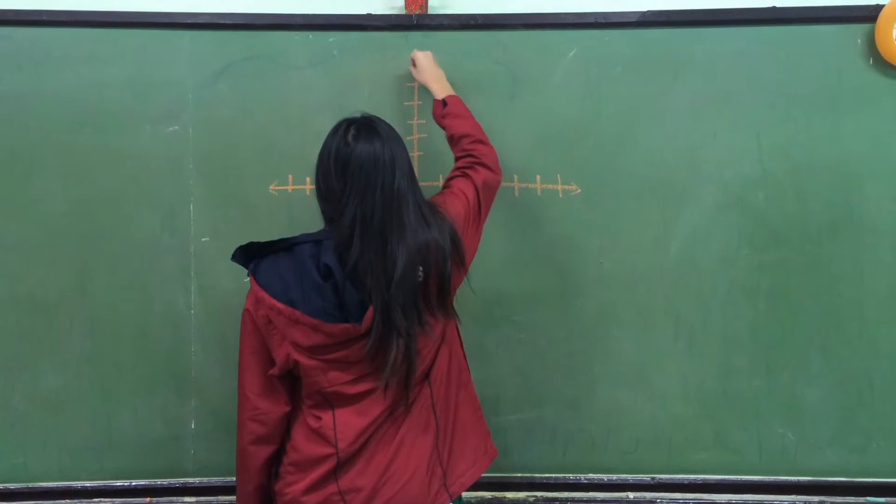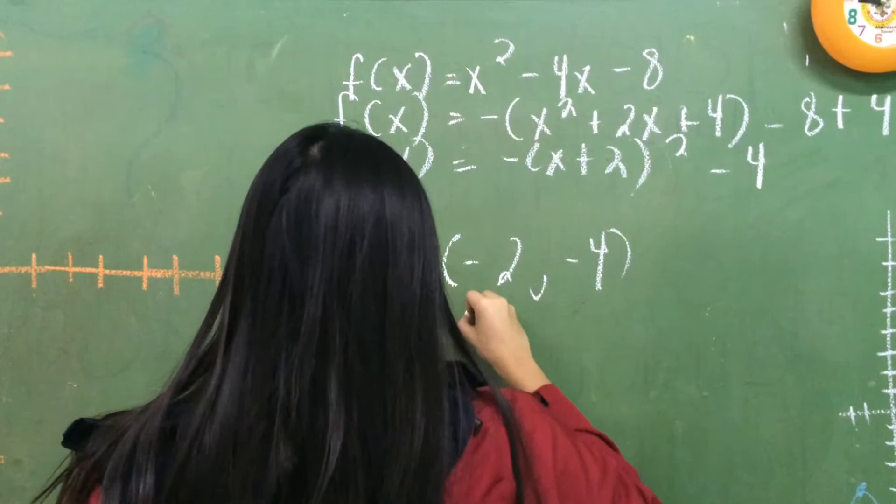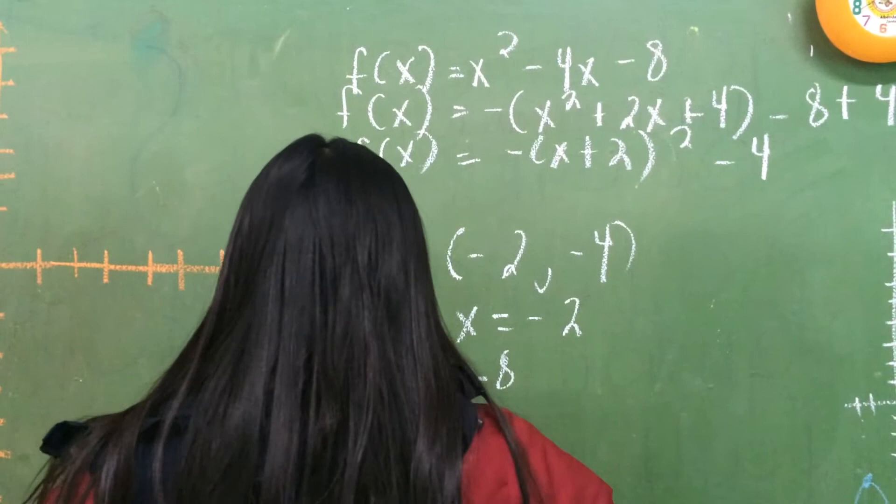From the vertex form, we simply get the opposite of 2 for the vertex and the AOS. The vertex will now be (-2, -4), and the AOS is -2. The y-intercept is from the original function, which is -8. We solve for the x-intercept, but it won't be relevant for this graph.